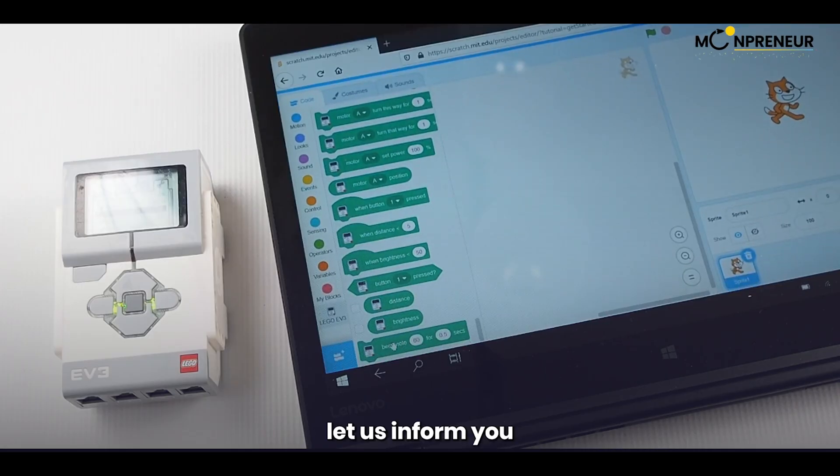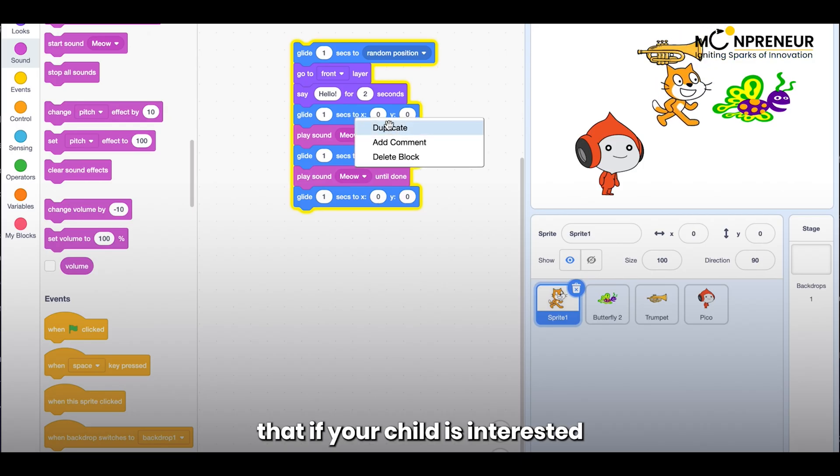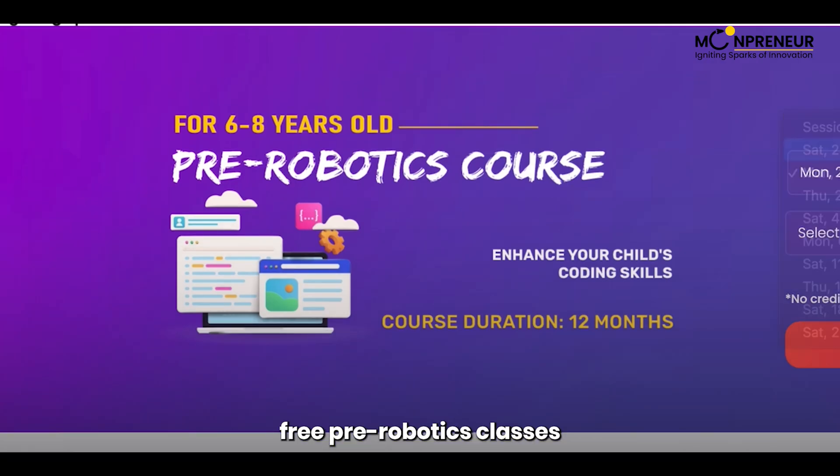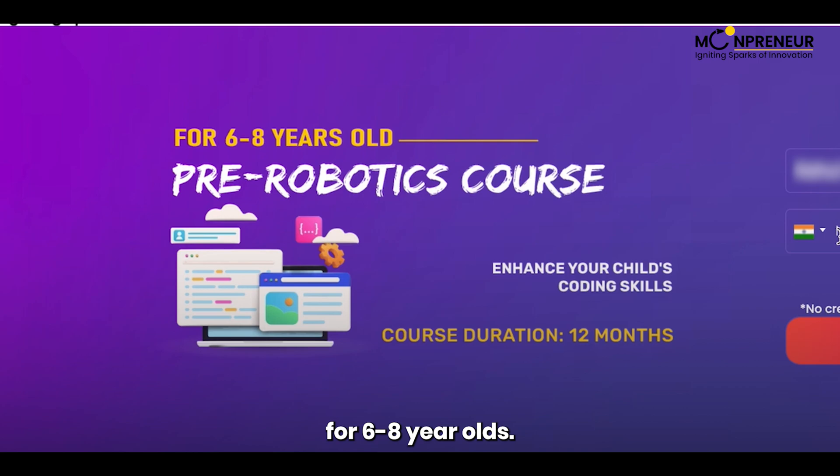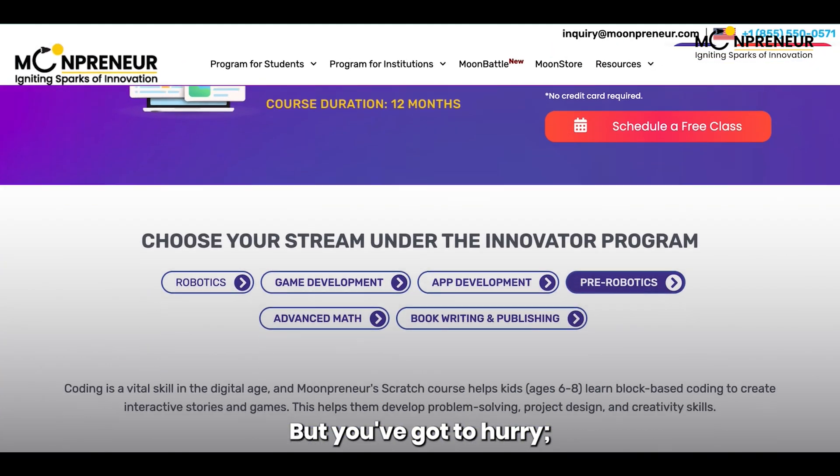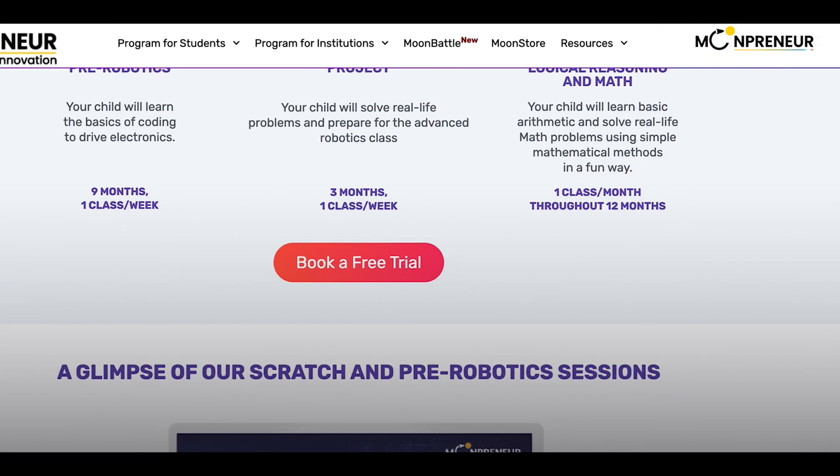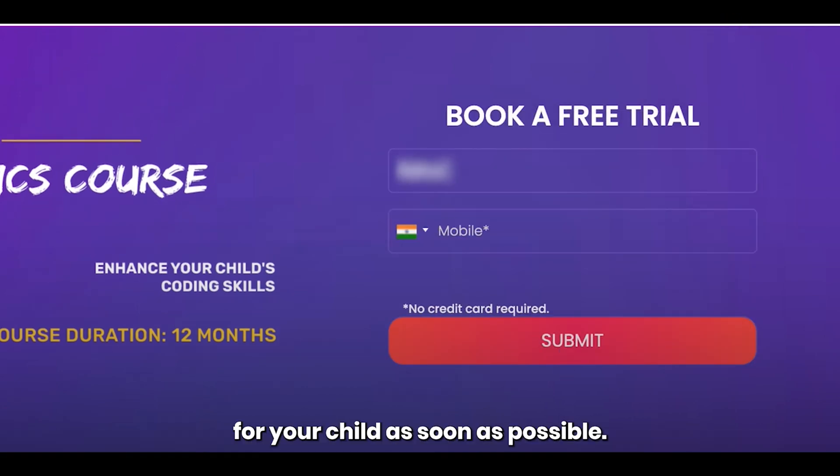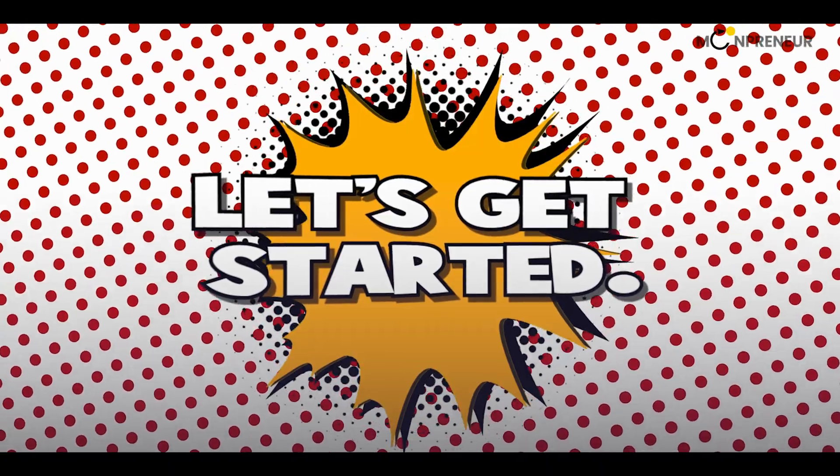Before starting, let us inform you that if your child is interested in block coding, Minpreneur is offering free pre-robotics classes for 6 to 8-year-olds. But you've got to hurry. This offer won't last forever. So, book a free trial class for your child as soon as possible. So let's start the video.